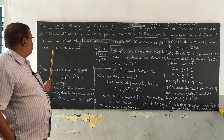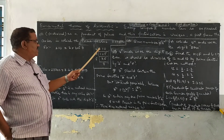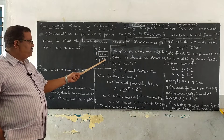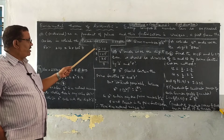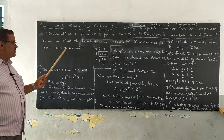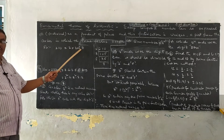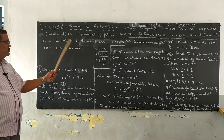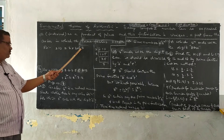Here I have to do one example: 210. 210 can be factorized as 2 × 105, then 3 × 35, then 5 × 7. So 210 can be factorized as 2 × 3 × 5 × 7. These are the prime factors of 210 — the dot notation is nothing but multiplication.